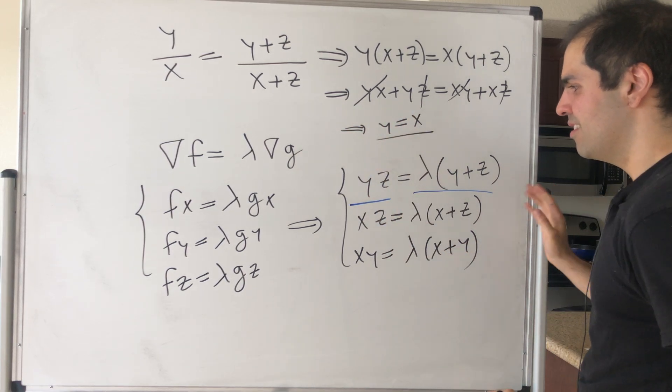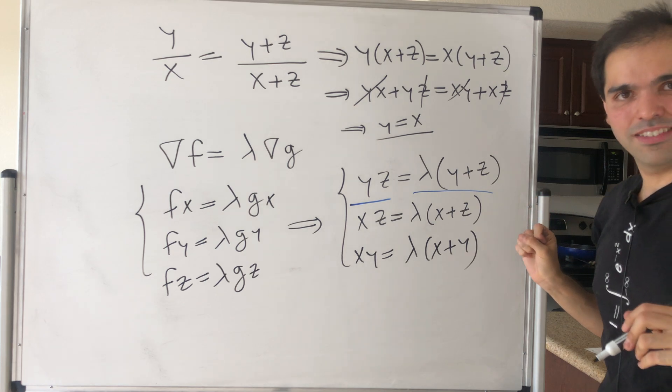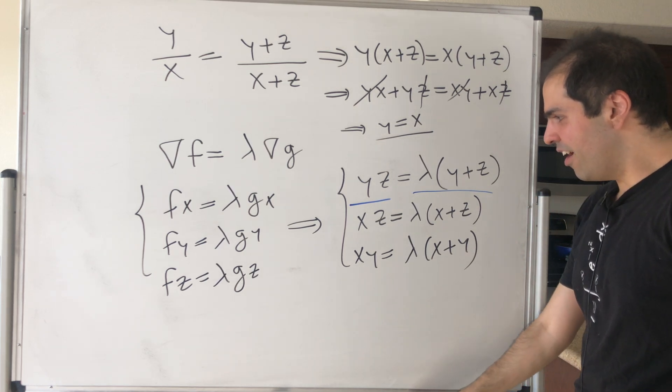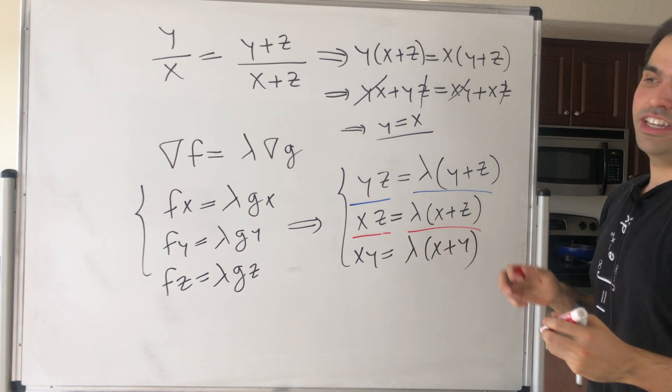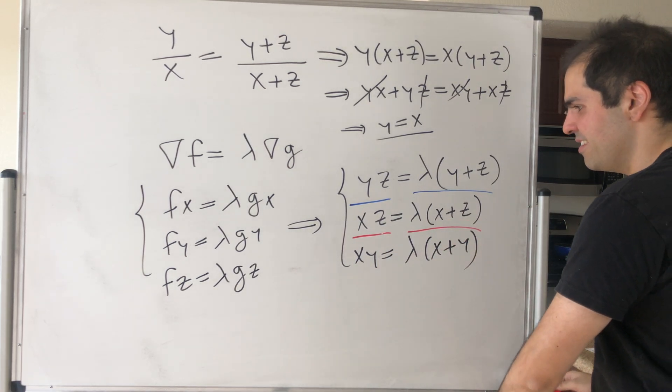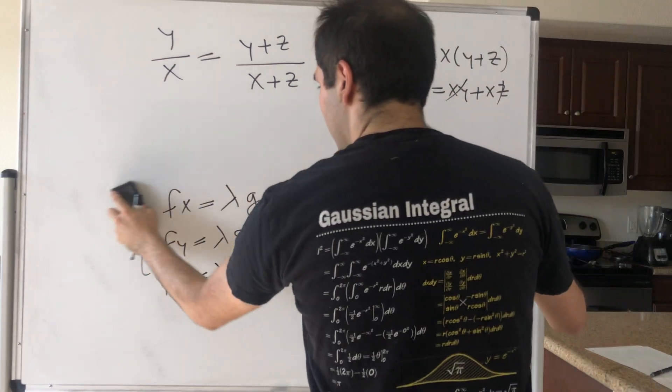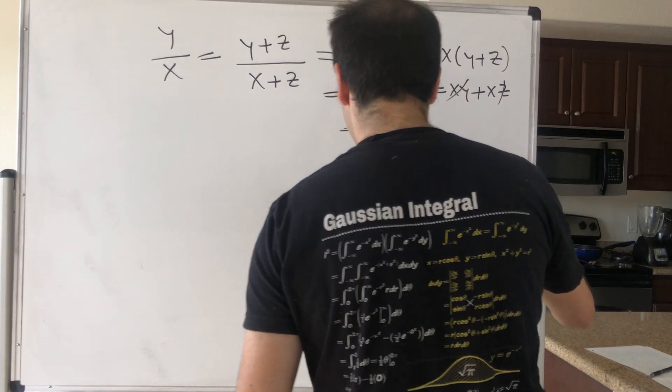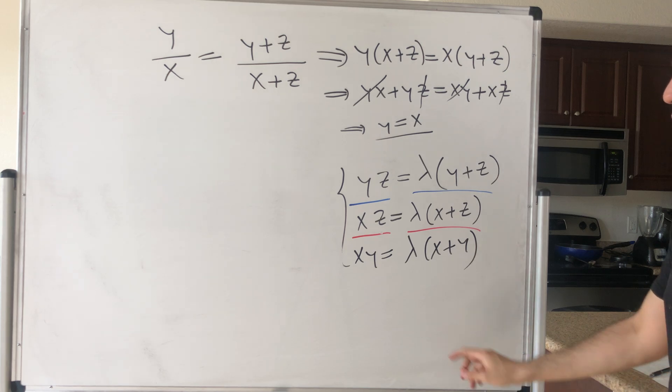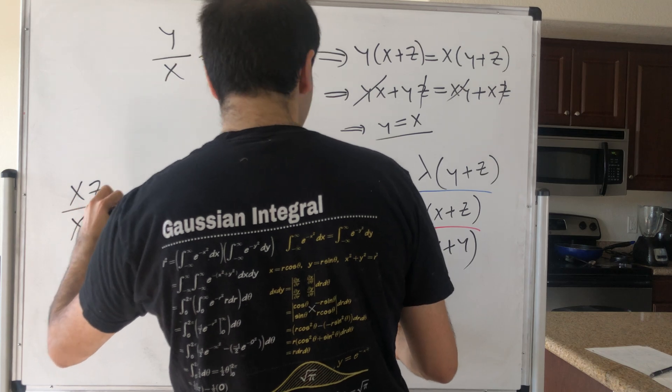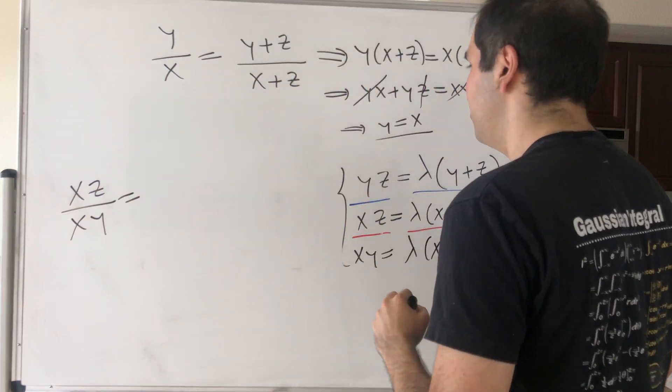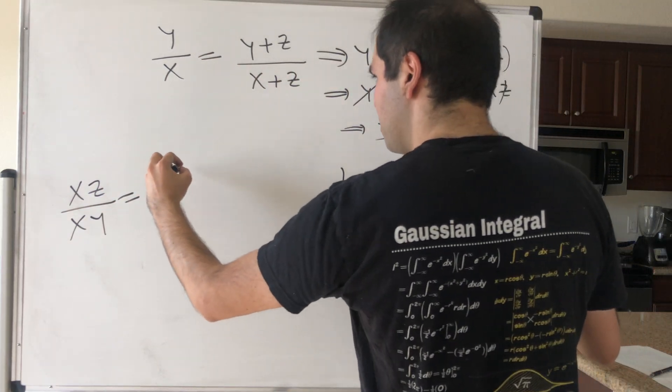So that's already one piece of info that we have. The other piece of info you can get, for example, by dividing this equation by this equation. Then what we get is xz over xy equals lambda over lambda, so that cancels out, (x plus z) over (x plus y).